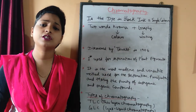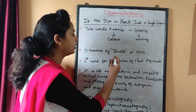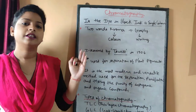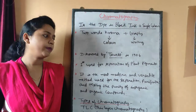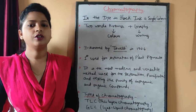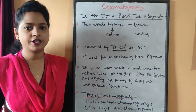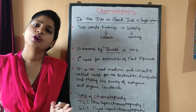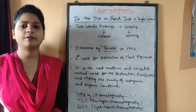This method was discovered by a Russian botanist, Tswett, in 1906. It was first used for the separation of plant pigments, specifically from spinach leaves. In class 11 biology, you have an experiment on the separation of different pigments in a spinach leaf. As you know, plants contain several types of pigments other than chlorophyll, and this technique can be used to separate all of those pigments.